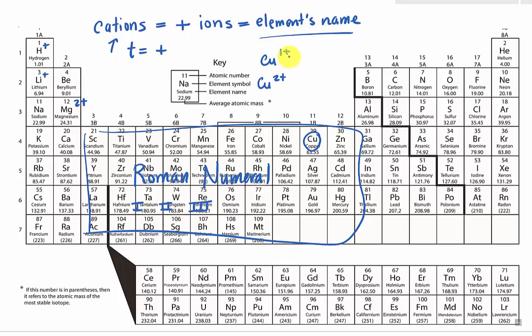In this case, if we look at copper 1 plus, that would be copper. So you notice how we take the name of the element, except we are adding something extra. In the parenthesis, we are going to put the charge. In this case, it is 1. So the Roman numeral of 1.